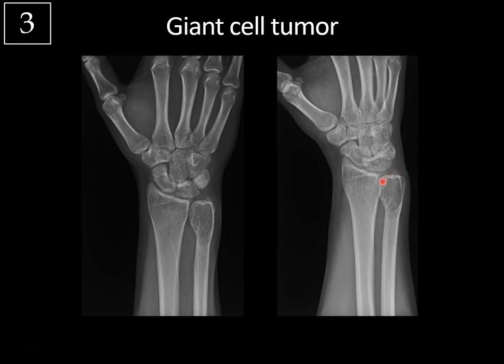Giant cell tumors tend to be eccentric, though that's difficult to tell when the lesion is large, as here it fills the entire distal ulna. These are usually benign but can be locally aggressive, and you may even see a pathologic fracture through them, though not in this case. Up to 10% can be malignant. The differential diagnosis for a lytic bone tumor is broad, but you can narrow it based on whether growth plates are closed and on patient age.